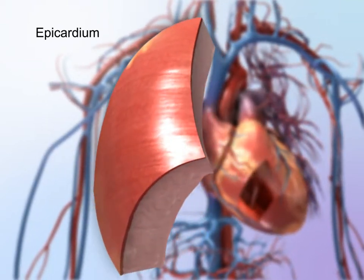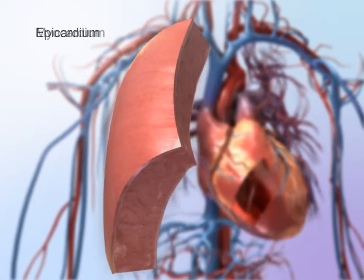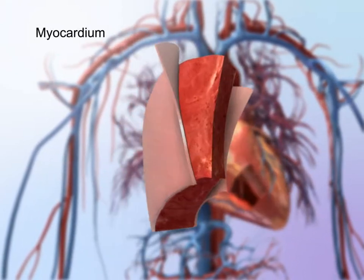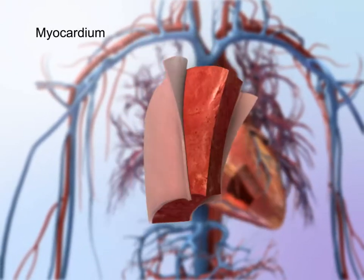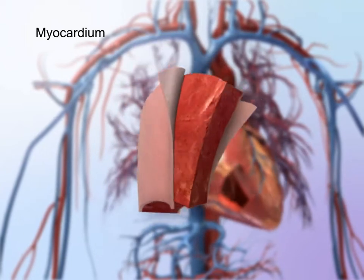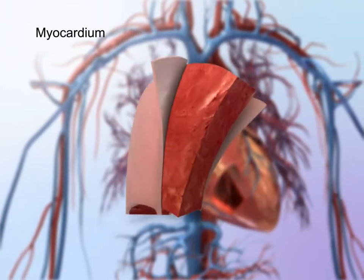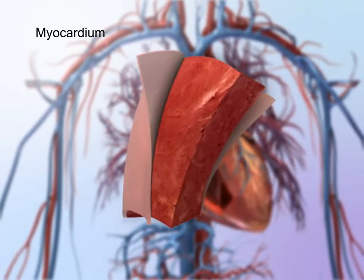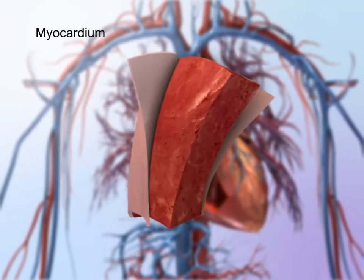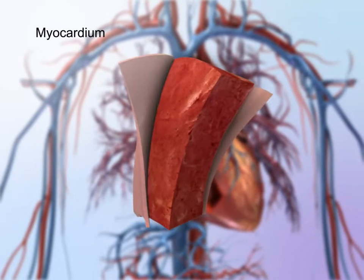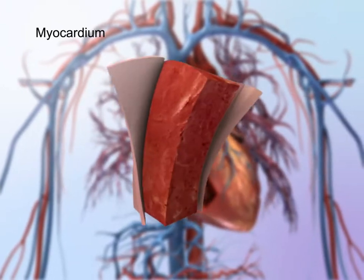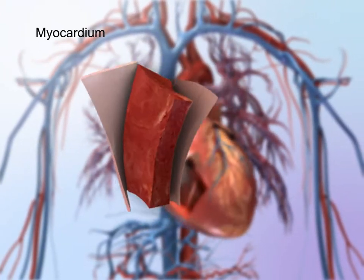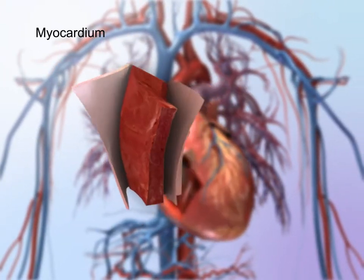Beneath the epicardium lies the thick cardiac muscle of the myocardium. The myocardium is responsible for the heart's pumping action, making powerful continuous contractions possible. This striated tissue contracts involuntarily in response to signals from the heart's own conduction system.